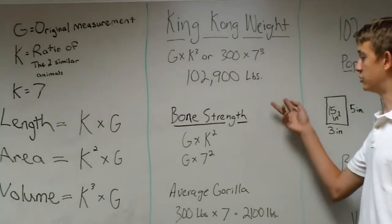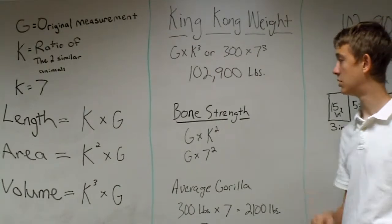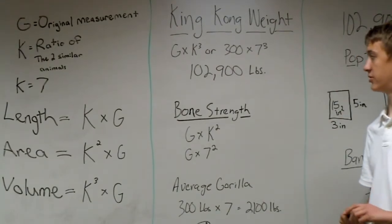So, King Kong's weight, which follows the volume equation, would be 300 times seven cubed, or about 103,000 pounds.